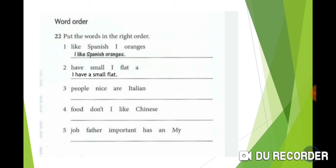Number 3: People nice are Italian. The subject is people, but the adjective Italian comes before the noun, so it becomes Italian people. The verb is are, and we complete it with the adjective nice. Italian people are nice.